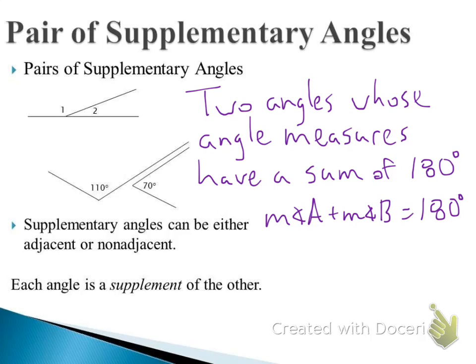In the top example, angles 1 and 2 share that side — they're together, attached. In the bottom example, the 110 and 70 are not really attached, just near each other, so those are non-adjacent. Also, as with complementary angles, each angle is a supplement of the other. If you're asked for the supplement of 110 degrees, you find the angle that pairs with it to make 180 degrees, which would be 70.